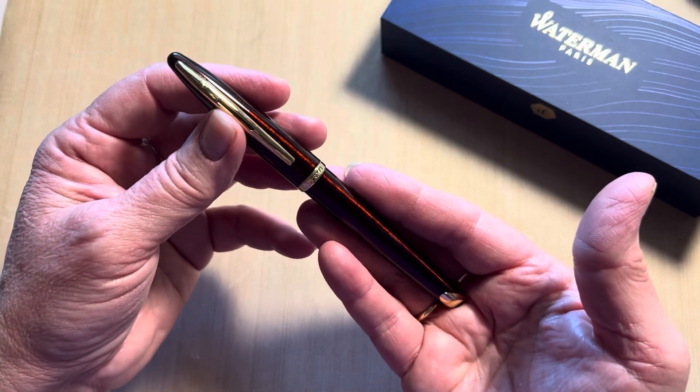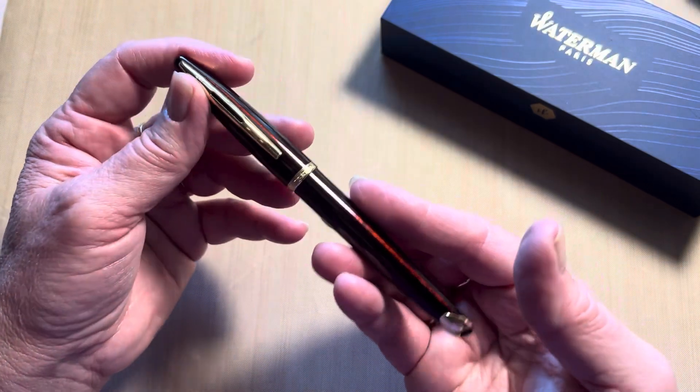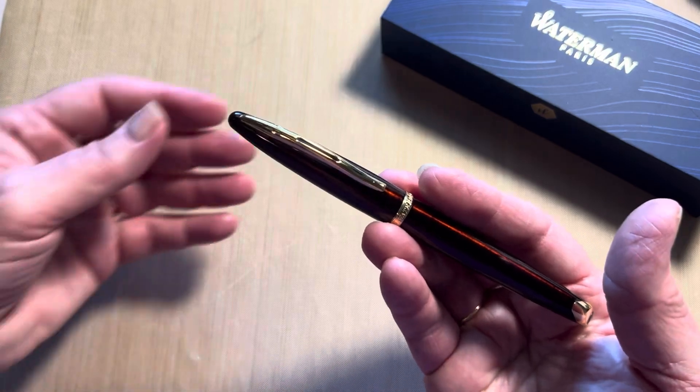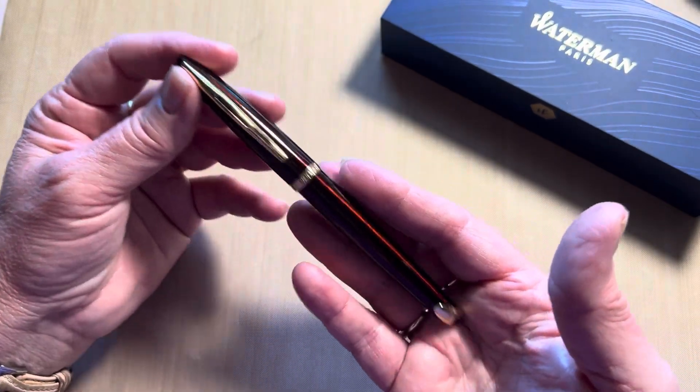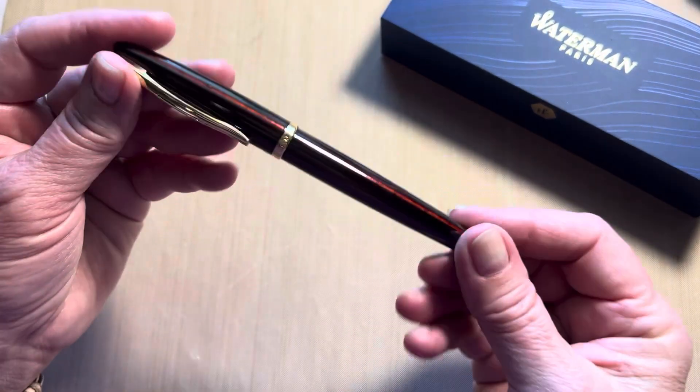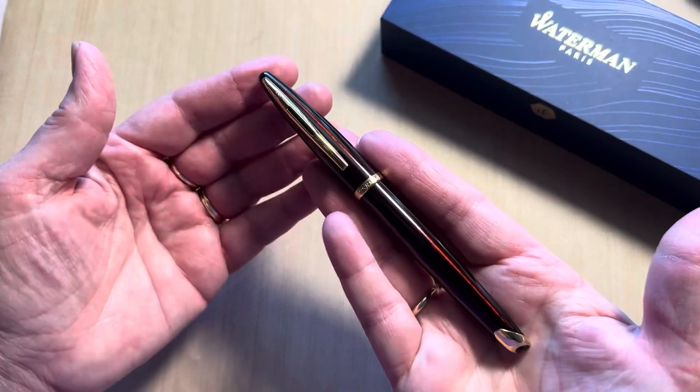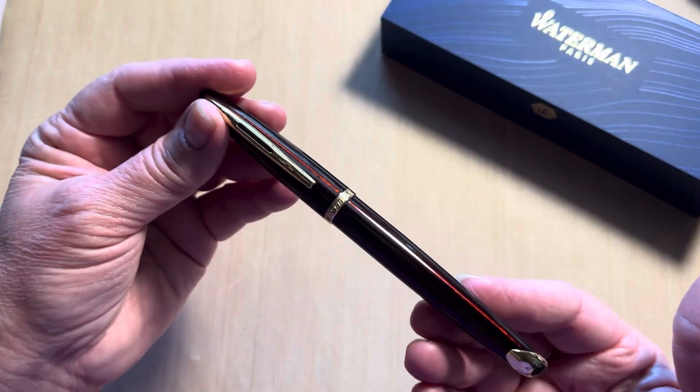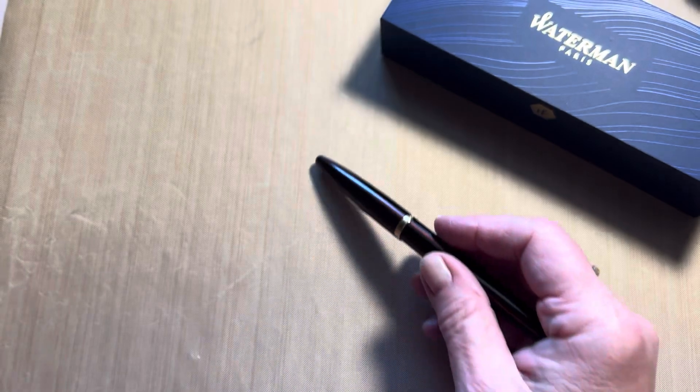My Waterman ink that I do have is Serenity Blue, and I have that inked in my Lamy 2000 now, but I don't think I want a blue ink right now for October with this gorgeous amber pen. I am considering the Monteverde Pumpkin Cake - I think that would be gorgeous in here.